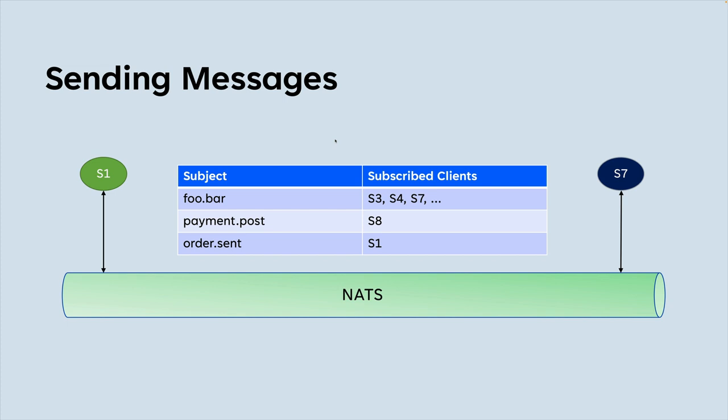There's a feature in NATS called JetStream that we can enable to tell NATS to operate like a Go channel — keeping the message even if there are no subscribers. That way the publisher could be publishing to a subject and the messages would be persistent, so when clients come online later they would find those messages there.